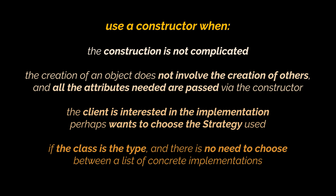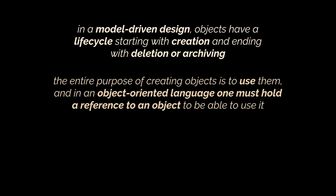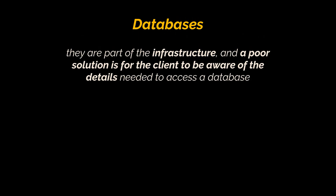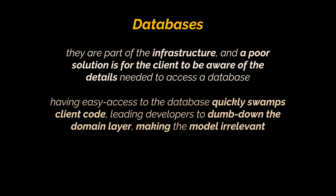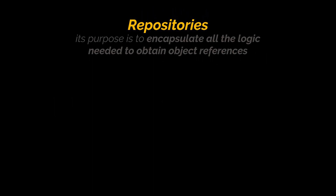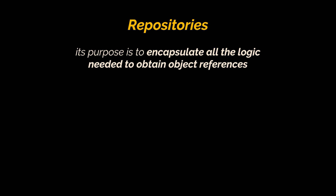In a model-driven design, objects have a life cycle starting with creation and ending with deletion or archiving. A constructor or factory takes care of object creation. To use an object in an object-oriented language one must hold a reference to it — one way to access a previously created object is to connect to a database and retrieve it. However, a poor solution is for the client to be aware of the details needed to access a database, as this quickly swamps client code, leading developers to dumb down the domain layer, making the model irrelevant and causing the domain focus to be lost.